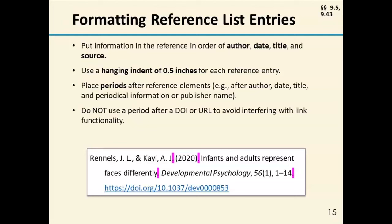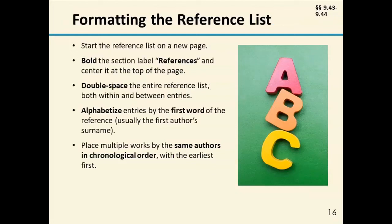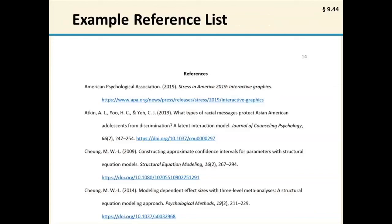Once you have one reference, you'll have a whole list. That list should start on a new page with the word 'References' in bold centered at the top. Double-space the entire list, both within entries and around entries. Alphabetize the entries, and if there are multiple works by the same author or authors, arrange them in chronological order. There's a lot more detail about how to order references in more complicated cases in Chapter 9.